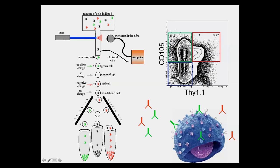You can gate out particular populations of cells with unique surface characteristics. For instance, in the red box we can pick out cells that are positive for a particular surface marker and CD105 — two different types of proteins uniquely expressed on that population. When the sorter detects signals falling within the gate, it turns on electromagnets, allowing us to isolate these unique cell types.